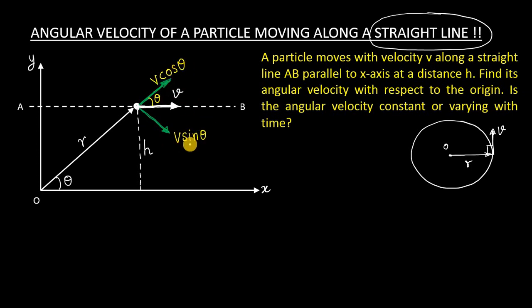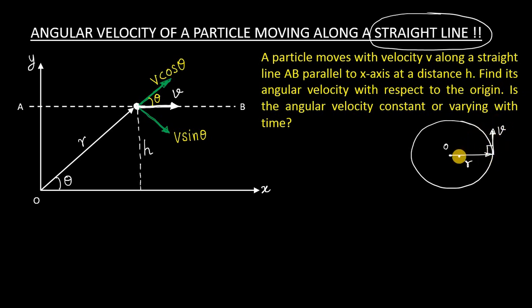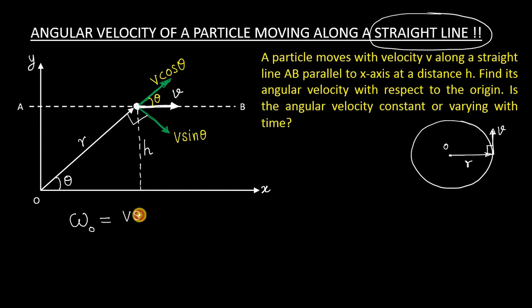We have both components. Now let us write down the angular velocity. Comparing with the circle, the velocity must be perpendicular to the radius. In this diagram, v sinθ is perpendicular to the radius vector. Therefore, we can say angular velocity with respect to the point O is equal to v sinθ divided by r.